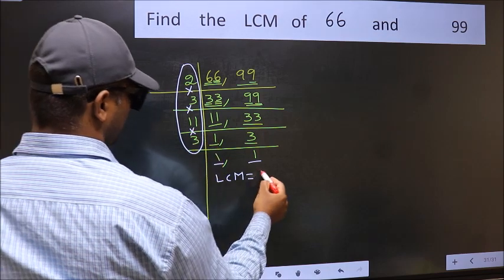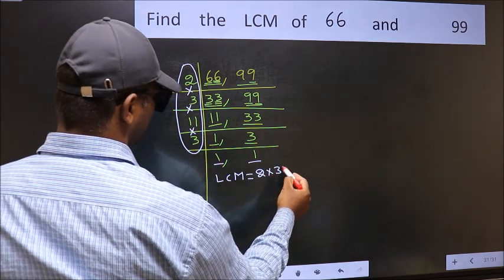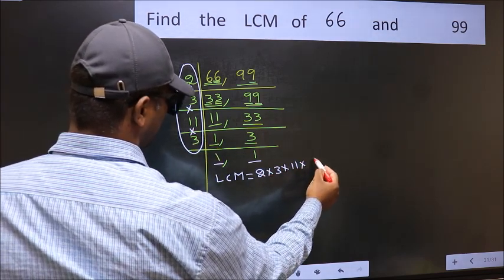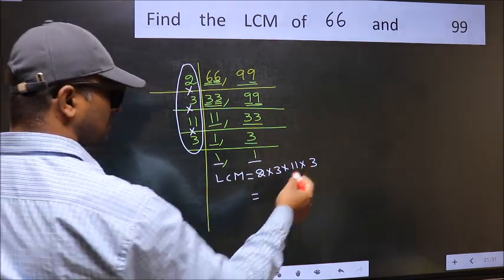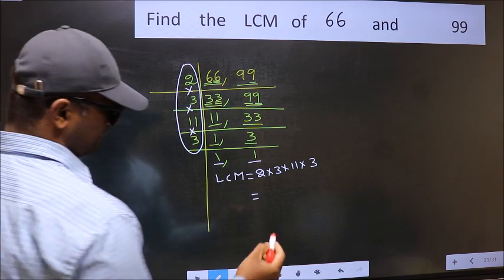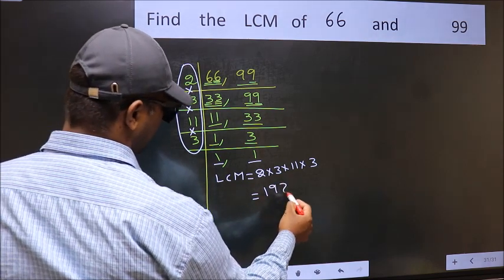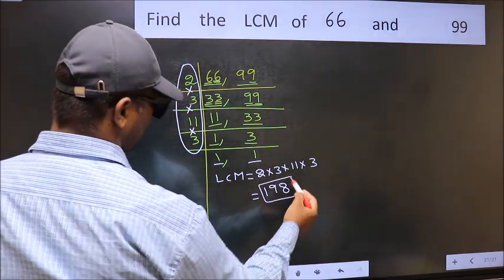That is 2 into 3 into 11 into 3. When we multiply these numbers, we get 198 is our LCM.